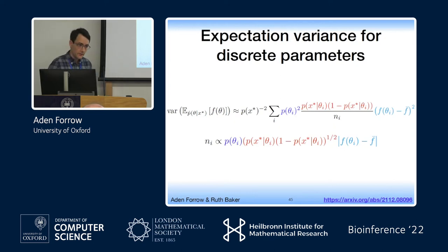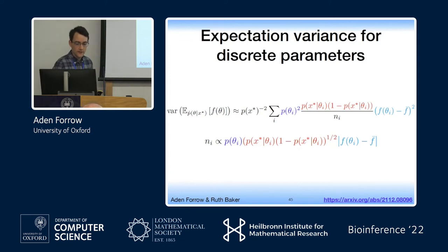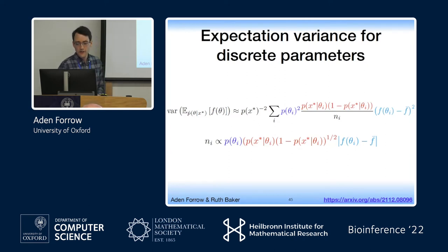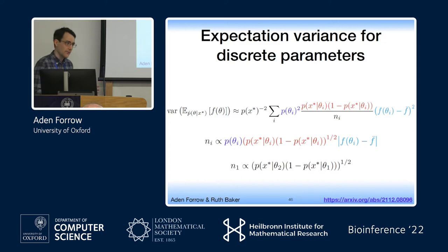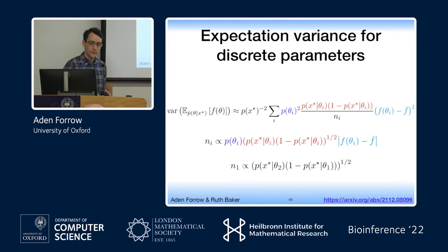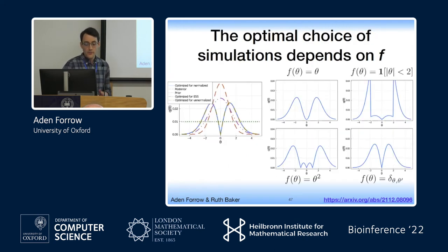The third term, completely omitted in the acceptance rate or effective sample size formulation, is that this depends on the function you want to estimate. You should spend more effort on regions where inaccuracy in the likelihood would translate to inaccuracy in your expectation — that is, where your function value is very different from its posterior mean f-bar. In the simplified case of two parameters, many terms drop out, and it turns out that no matter what your function is or what your prior or likelihood is, you always should be simulating more from the less plausible parameter. But in general, it very much depends on the function f you're trying to estimate.